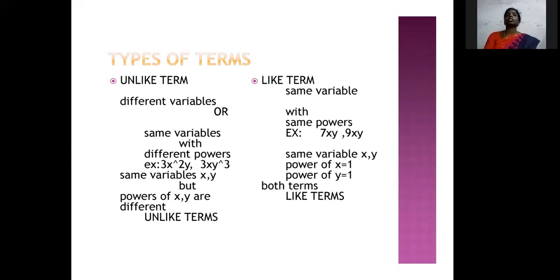Next, like terms. What is like terms? Same variable with same powers is called like terms. For example, 7xy and 9xy. In this example, we have two same variables x and y, and power of x is equal to 1 and power of y is equal to 1. These two terms have the same variables x and y with the same powers. So, these two terms are called like terms.